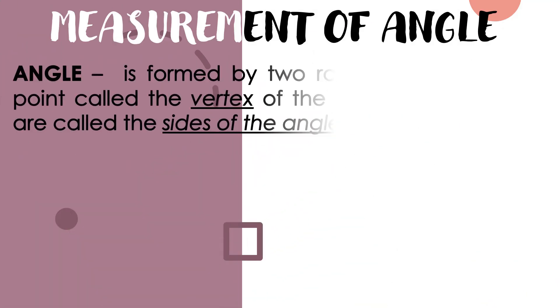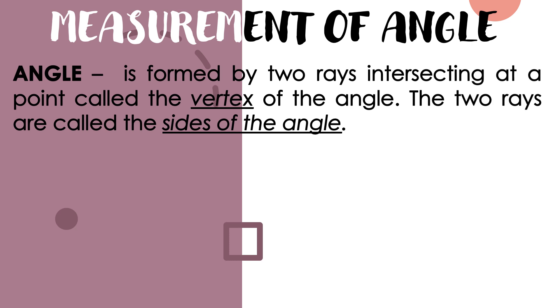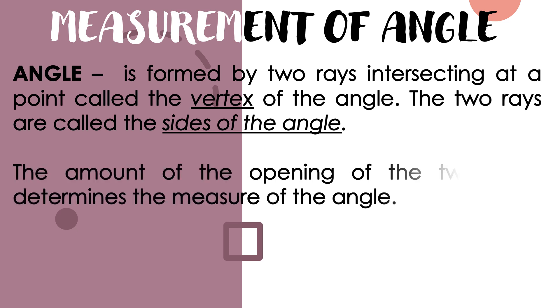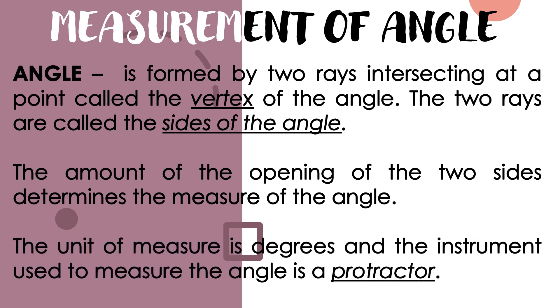So what is angle? Angle is formed by two rays intersecting at a point called the vertex of the angle. The two rays are called the sides of the angle. The amount of opening of the two sides determines the measure of the angle. The unit of measure is degrees and the instrument used to measure the angle is a protractor.